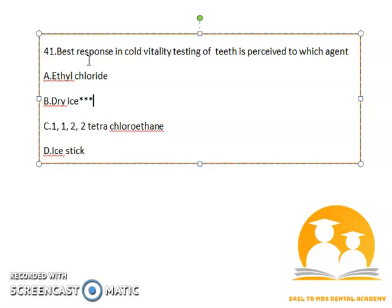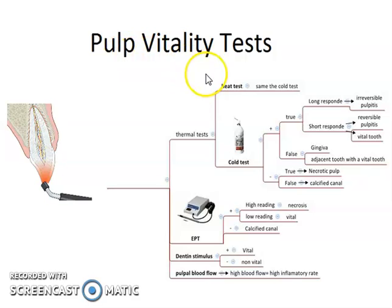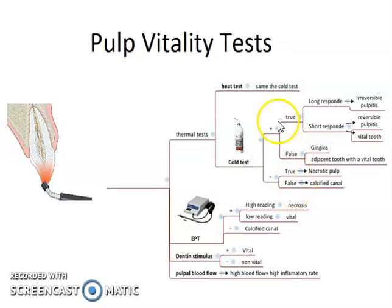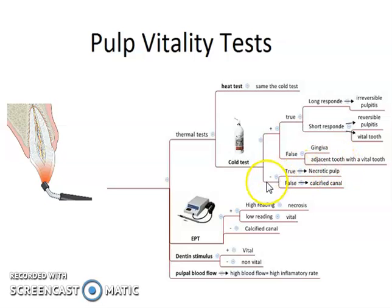The best response in cold vitality testing of teeth is perceived with dry ice. In the thermal test, we have heat test and cold test. Students should know the responses: true positive, false positive, true negative, and false negative. A response of longer duration indicates irreversible pulpitis; shorter duration indicates reversible pulpitis. False positive occurs when thermal testing is done on gingiva or adjacent tooth. True negative is seen with a vital tooth; false negative in case of necrotic pulp.